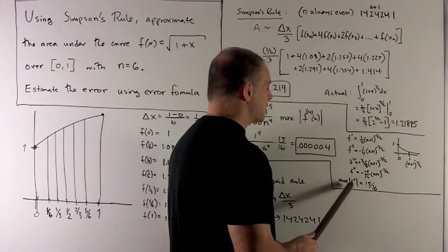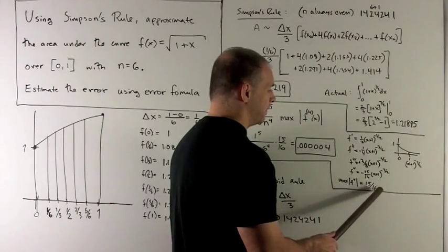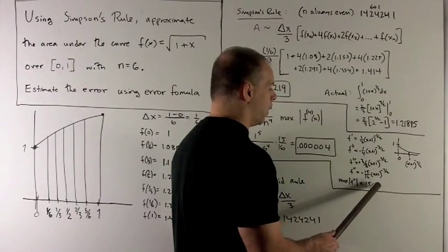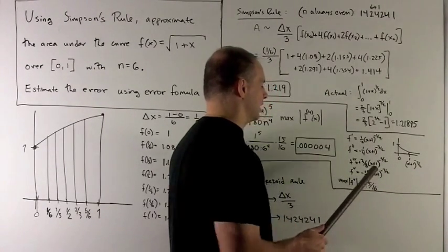So, if I take the max of the absolute value of f to the 4th, we have the 15 sixteenths coming out, and then the max on the rest of this is just going to be 1, so we're going to get 15 sixteenths here.